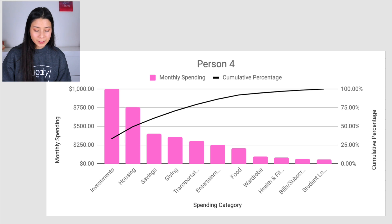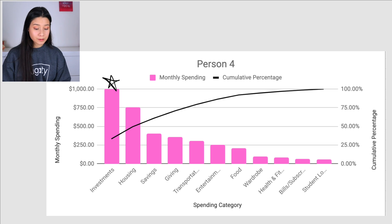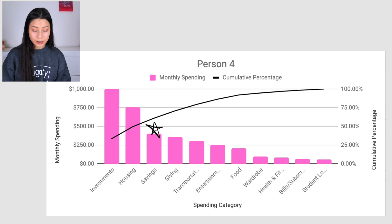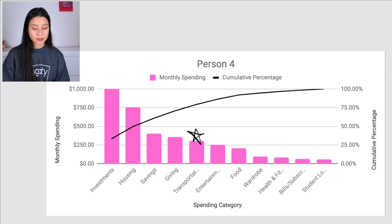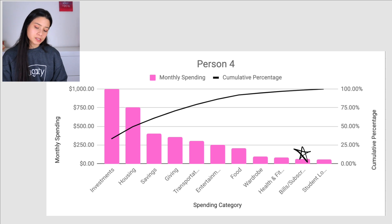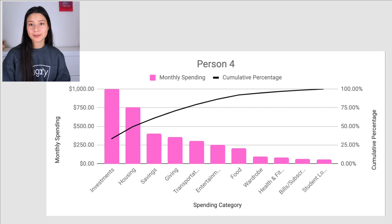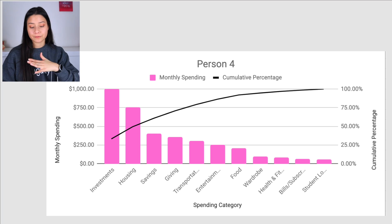The last person has a nice spread across all categories with nothing at zero. $1,000 in investments, $750 on housing — that's 25% of $3,000 monthly income, which is perfectly appropriate for housing. $400 on savings, maybe building an emergency fund or saving for a down payment. $350 on giving — over 10% of income every month. $300 on transportation, $250 on entertainment, $200 on food, $90 on wardrobe, $80 on health and fitness, $60 on bills and subscriptions, and $50 on student loans — hopefully their last payment. Investments and housing are the two main categories, but this budget is more spread out.